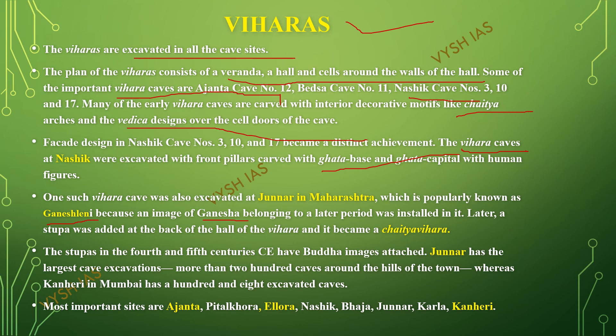A stupa was added at the back of the hall of the vihara, and it became a chaitya-vihara. The stupas in the fourth and fifth centuries CE have Buddha images attached to them. Junnar has the largest cave excavations, with more than 200 caves around the hills of the town, whereas Kanheri in Mumbai has about 108 excavated caves. The most important sites of viharas are Ajanta, Pitalkora, Ellora, Nasik, Bhaja, Junnar, Kanheri, and Kanheri.